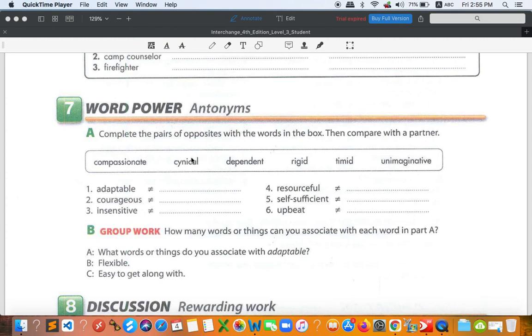Now let's check the answer altogether. We try to find the answer. The first one, adaptable - the opposite of adaptable is rigid. You can change, this one cannot change, inflexible. Courageous, courage - this one is timid, is coward. Insensitive - you can say compassionate, sharing sadness, sympathy with something or with your friends.